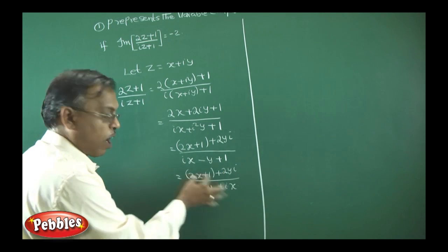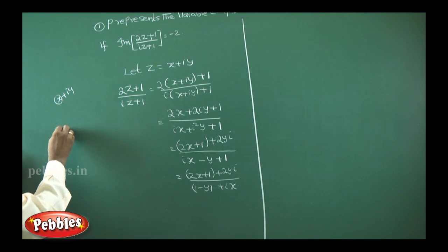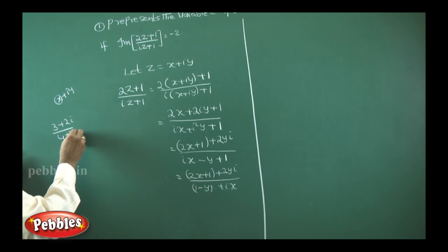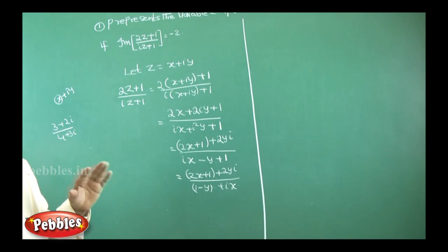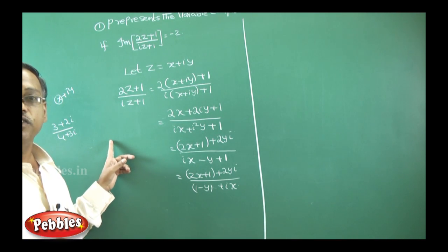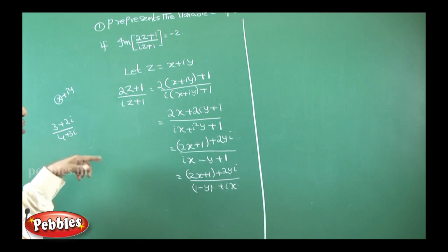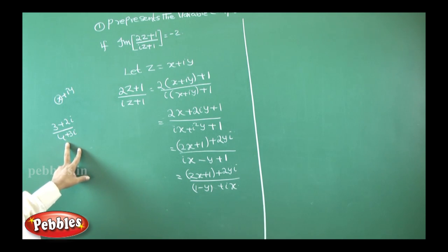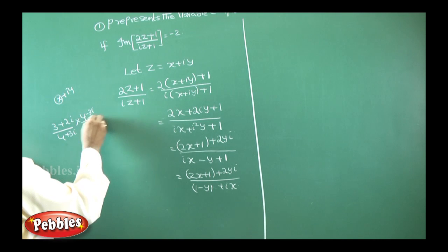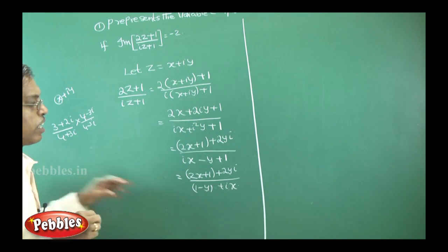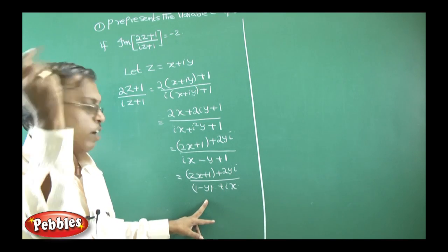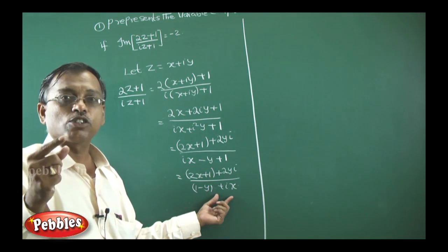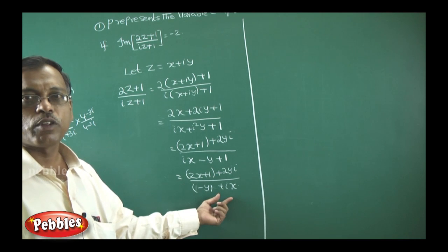This is now the division of two complex numbers. For example, (3 + 2i) / (4 + 3i) — to divide, you take the complex conjugate of the denominator and multiply both numerator and denominator by it. The conjugate of (4 + 3i) is (4 − 3i), so you multiply by (4 − 3i). In the same way, here we take the complex conjugate of the denominator.